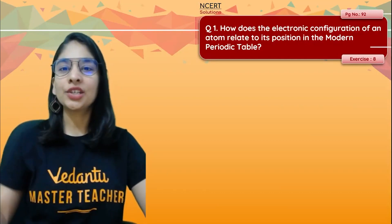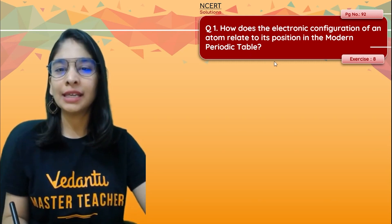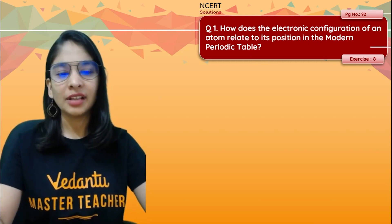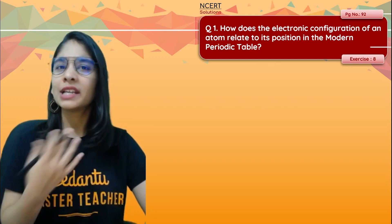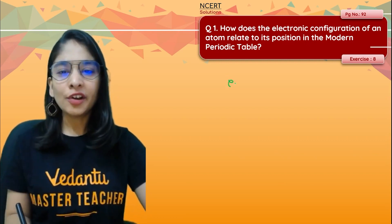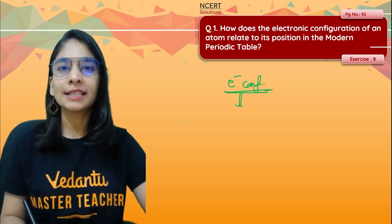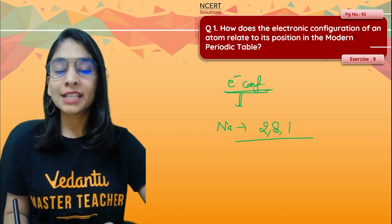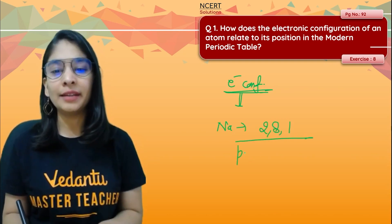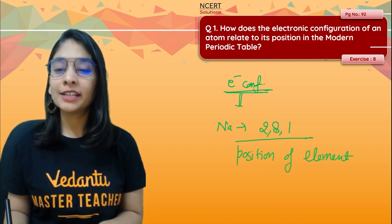Question number 1: How does the electronic configuration of an atom relate to its position in the modern periodic table? When we talk about the modern periodic table, which Moseley has made, the electronic configuration of elements can be very well understood. Configuration helps to decide the position of elements in the periodic table — you can easily understand where an element is.